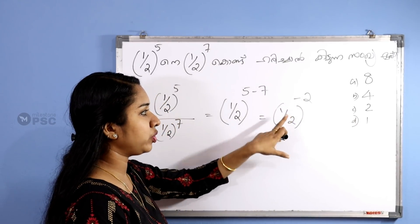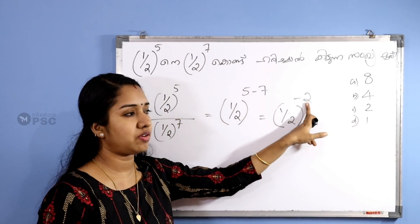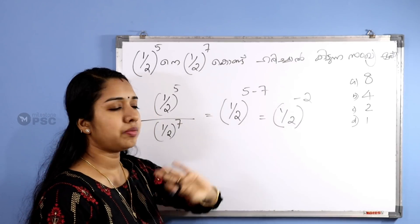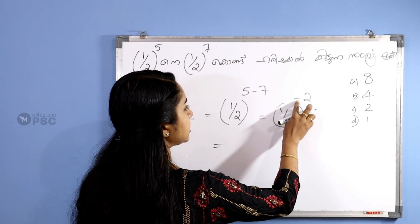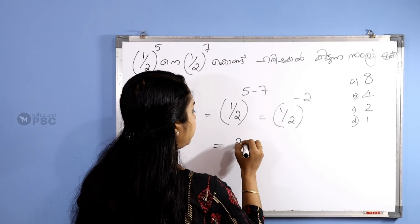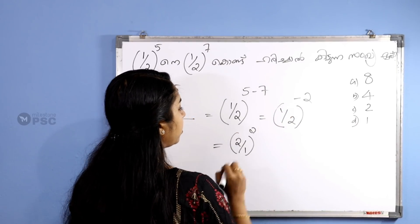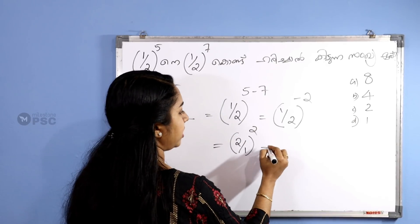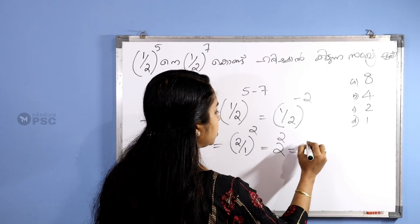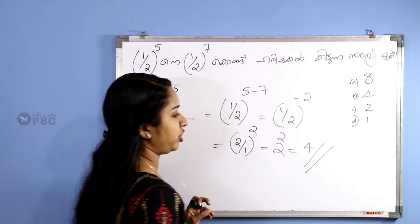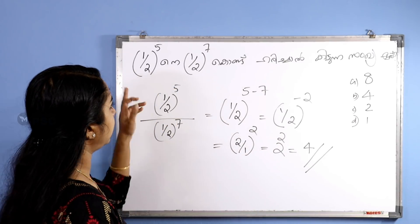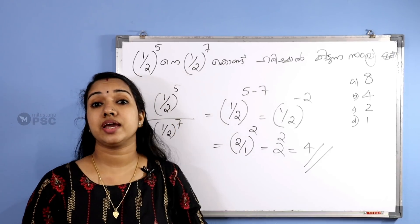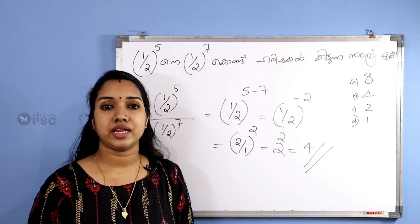Now we make the exponent positive. 1 by 2 whole raised to minus 2 equals 2 by 1 whole raised to 2, which equals 2 raised to 2, which equals 4. The answer is 4.